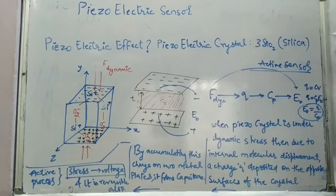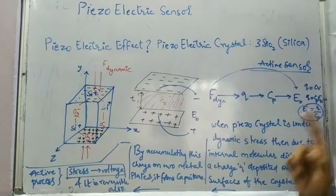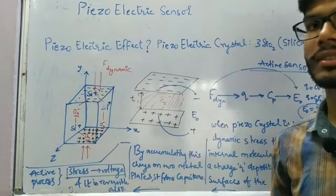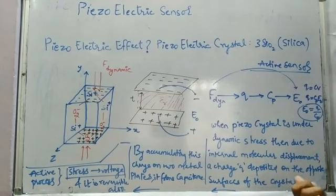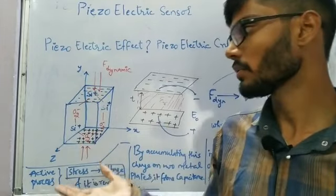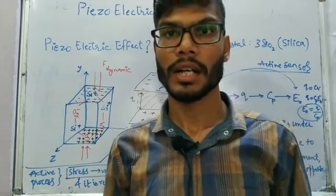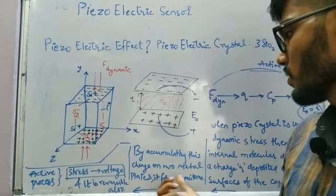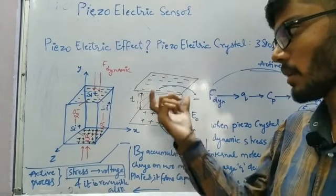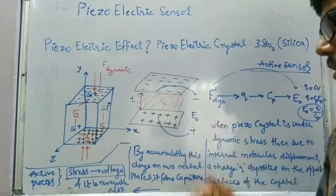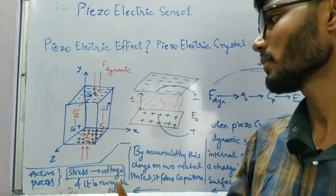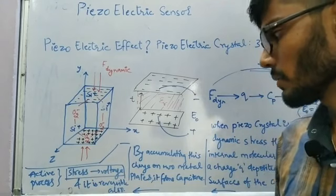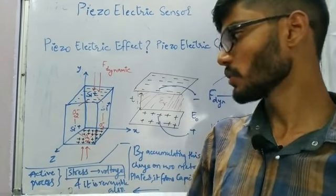The overall conclusion is: when the piezoelectric crystal is under dynamic stress — and I am focusing on dynamic stress because the piezoelectric crystal does not work under static stress — due to internal molecular displacement, a charge Q is deposited on the opposite surfaces of the crystal. Accumulating this charge on two metal plates forms capacitance CP, which gives the output voltage. This is an active process where stress is converted into voltage, and it is reversible — that is the reverse piezoelectric effect.